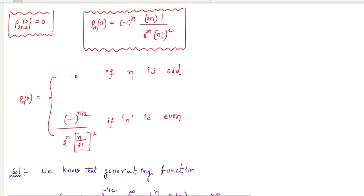This is the next property of the generating function of Legendre polynomial. Show that P_n(2n+1) of 0 equals 0, or P_n(0) for even n equals (-1)^n times (2n)! divided by 2^(2n) times (n!)^2. We can arrange these two properties as: P_n(0) = 0 if n is odd; P_n(0) = (-1)^(n/2) divided by 2^n times ((n/2)!)^2 if n is even.